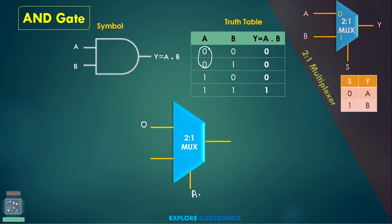When A is equal to 1, the second input will be selected in the multiplexer. So when the select line is 1, the output will be 0 or 1, which is the same as B — you can observe. So I am going to pass B from here, so that my output Y is equal to A·B. This is how we can implement an AND gate.